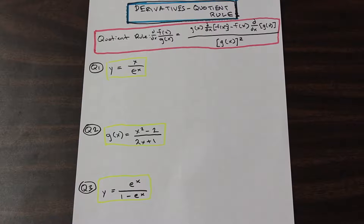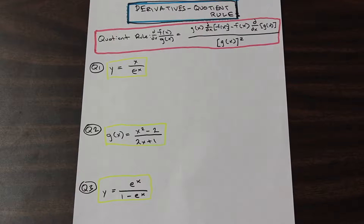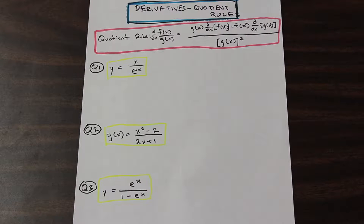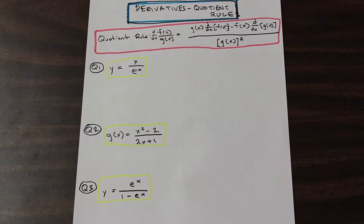Hey guys, Fred here, AF Math and Engineering. We're back. We're looking now at derivatives and we're looking at the quotient rule. So if you go back and take a look at what we've done so far in derivatives: we've done the power rule, we've done polynomial functions, we've done the product rule — two functions multiplied by each other, both with variables of x — and now we're going to move on to the quotient rule.